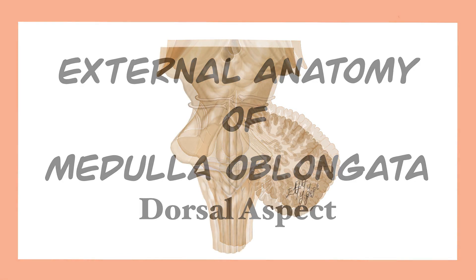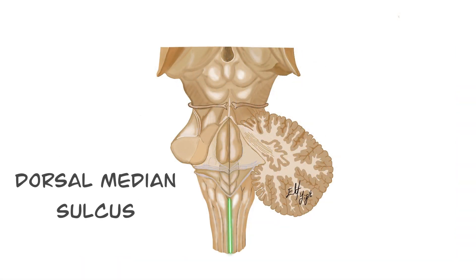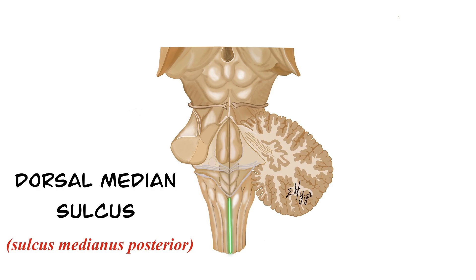On the posterior surface of the medulla oblongata there is a dorsal median sulcus on the midline. It is also known as sulcus medianus posterior in Latin. This groove is the same groove in the spinal cord which continues above.